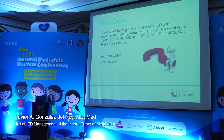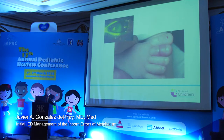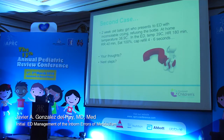Going back to the same case — the same girl — when you do the rapid cardiopulmonary assessment, everything was perfect. No fever, nothing. It turned out she had a corneal abrasion, or she could have had a hair tourniquet. But we could have ended up doing a spinal tap, ammonia, glucose, and everything else because we didn't spend time to do a good physical exam — which is the second thing we tell our residents.